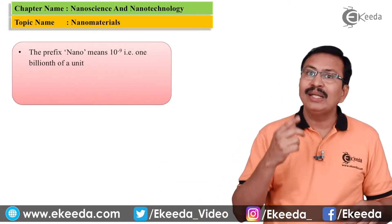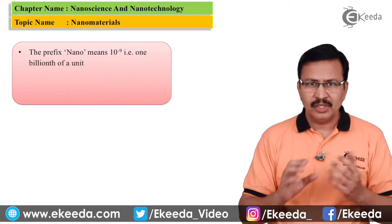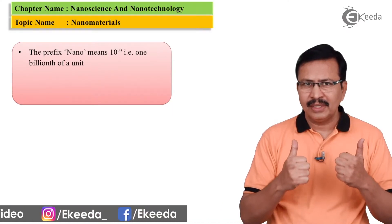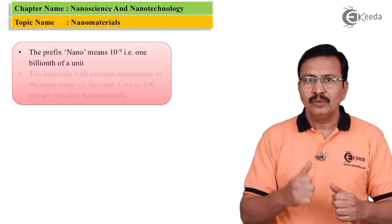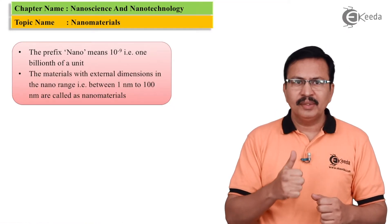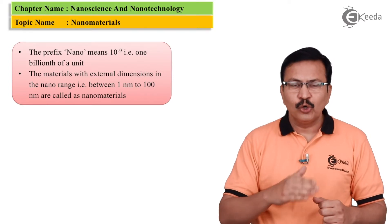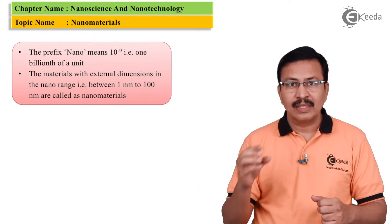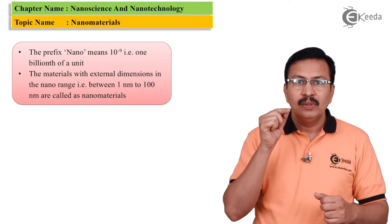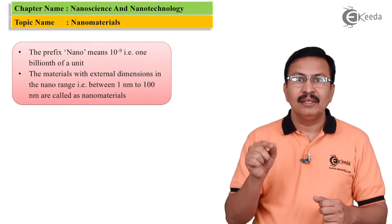Now when I say 1 billionth of a unit, say for example the unit is 1 meter, 1 divided by 1 followed by 9 zeros. That will correspond to 10 raised to minus 9 meters.